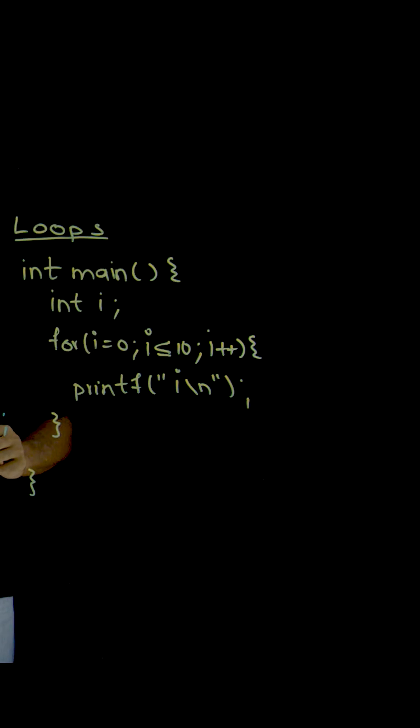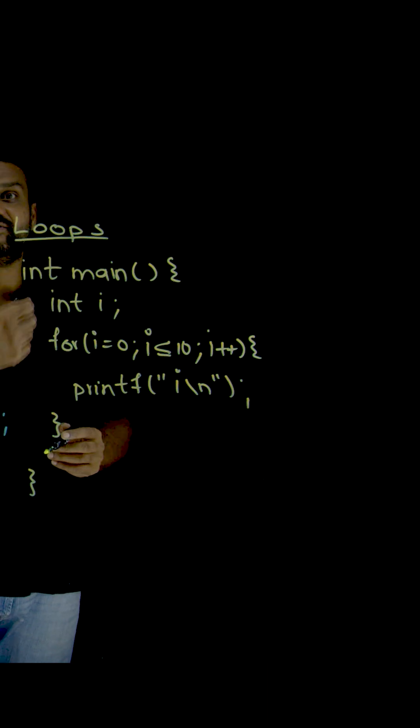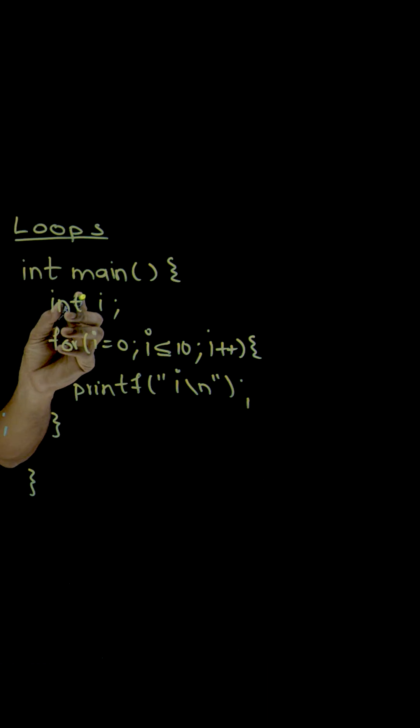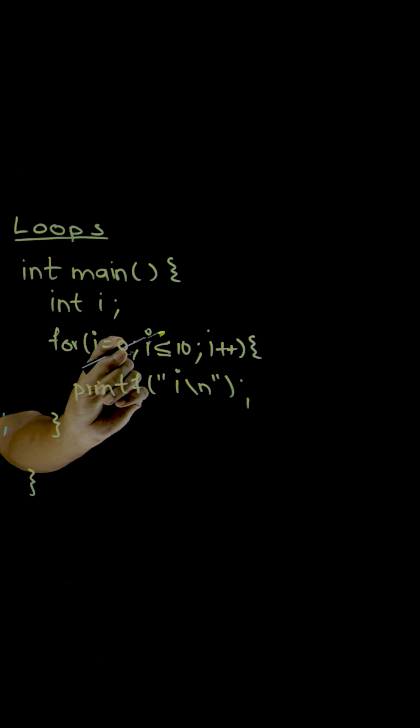Again, every line will get executed sequentially, but some lines of code will get executed more than one time. That is where the concept of loops came into existence. In this example, I have taken a very simple example. I have taken the value of i, and the value of i is going to start from zero.